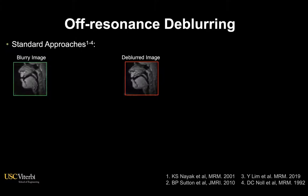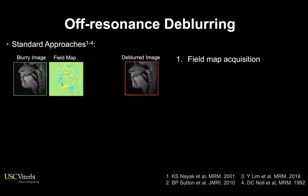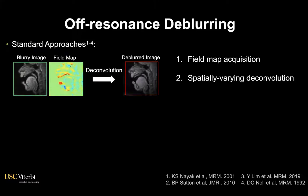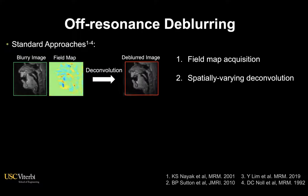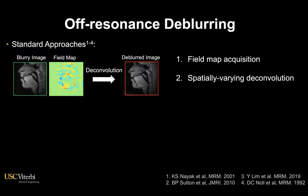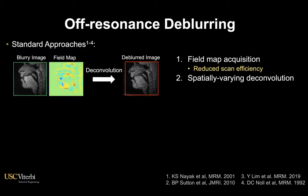Several deblurring methods exist and most of them involve two general procedures. First is a field map acquisition and the second is spatially varying deconvolution. The field map is a spatial map that contains information about the source of blurring, which is essential for correcting this type of artifact, whereas the acquisition of this field map often reduces scan efficiency.